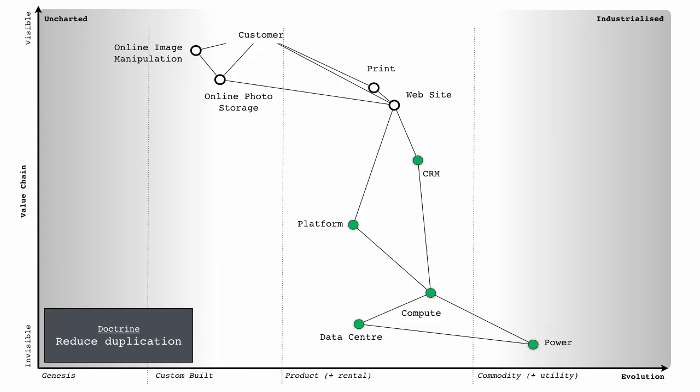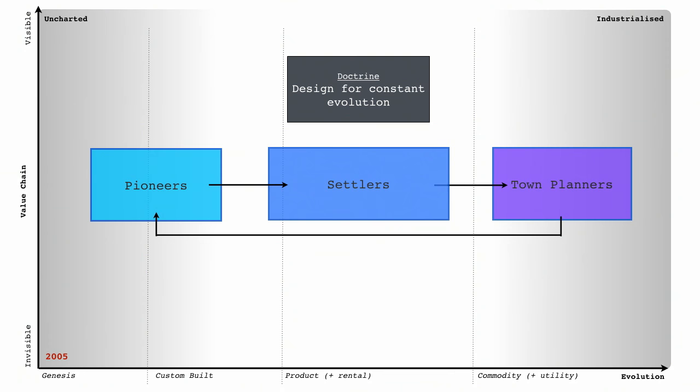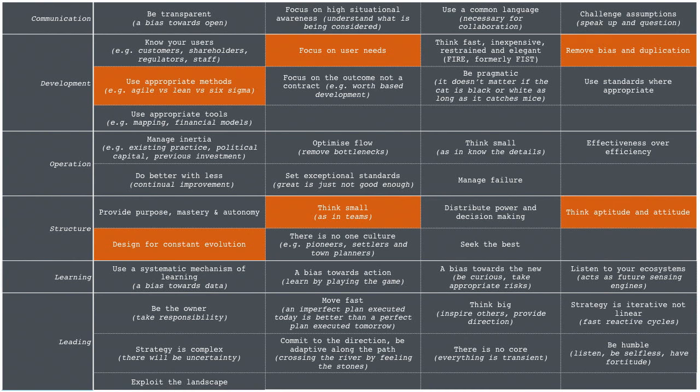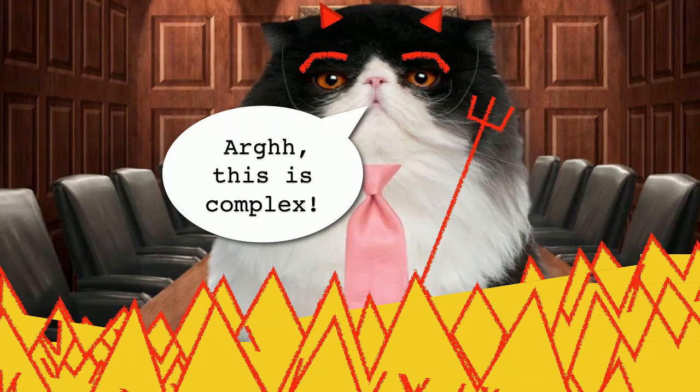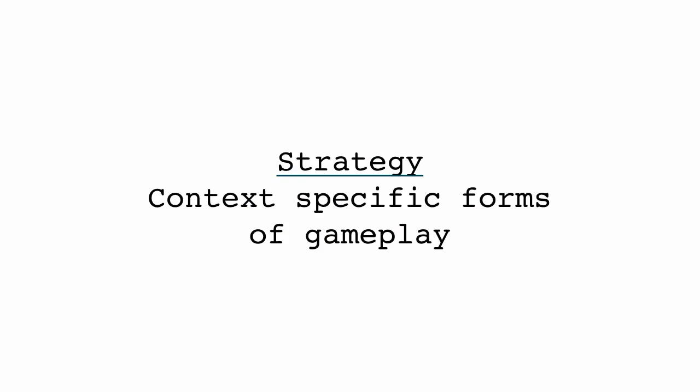And you can just take your map, you can describe the likely points of change, you can start using weak signals to refine on that. Then you get into doctrine. So we now have an idea of what's in our landscape, where it's going, so how do we organize ourselves. So you think about, well, we're going to focus on user needs. We're going to reduce duplication using multiple maps between different groups. Use appropriate methods. Think small. Think aptitude and attitude. Design for constant evolution. Prepare yourself for shock. There's about 40 common forms of universal doctrine. Really useful stuff. Actually, this is quite useful looking at competitors, because you get an idea of just how bad they are. To which people then go, oh, this is complex. And it is. That's why we like stories. That's why we like secrets of success. That's why we like magic frameworks. It is complex, I'm afraid.